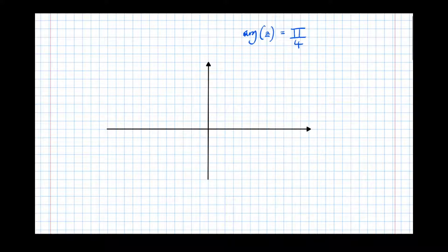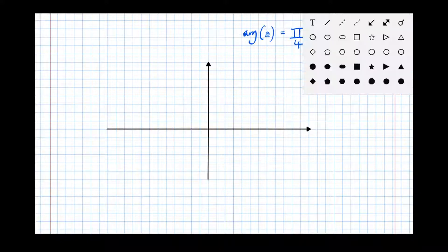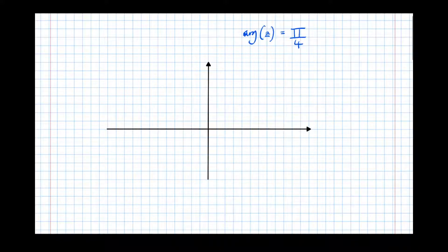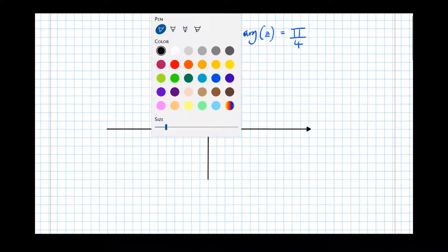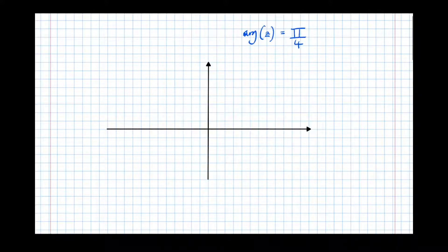So it's dead easy to go wrong here, so I'm going to make a common mistake. So I'm going to choose pi over 4. Anything with an argument of pi over 4—well, arguments go anti-clockwise, so there we go.